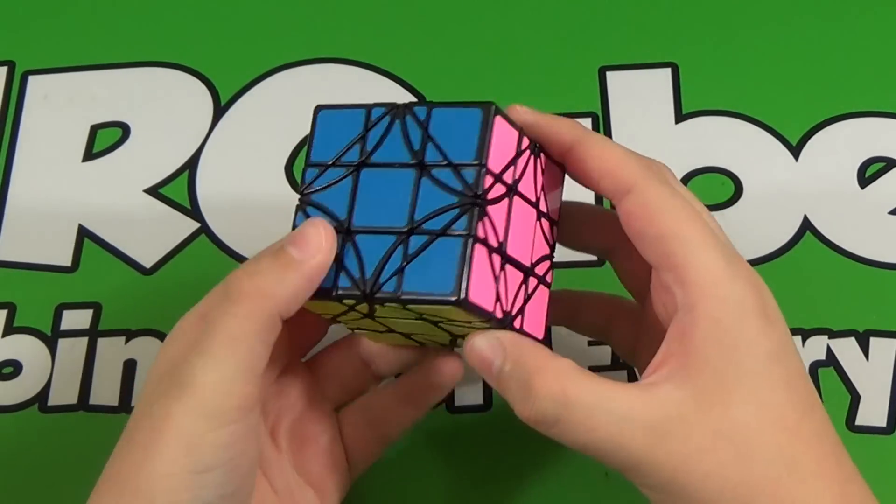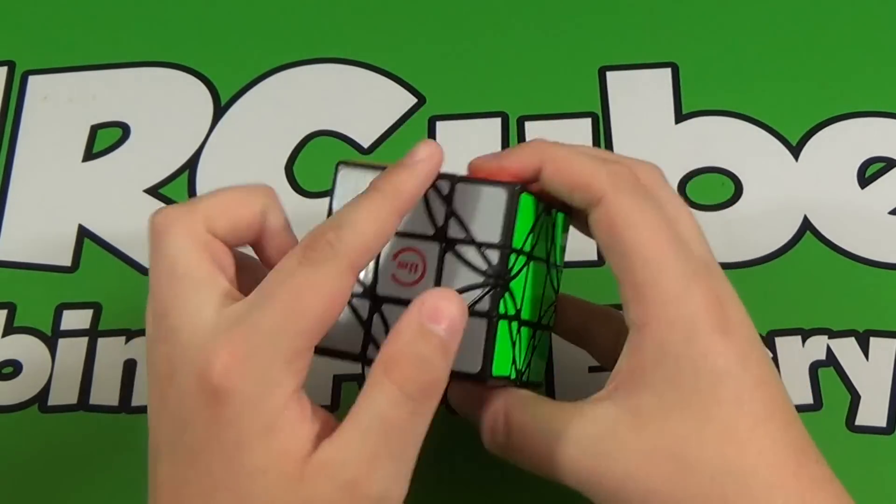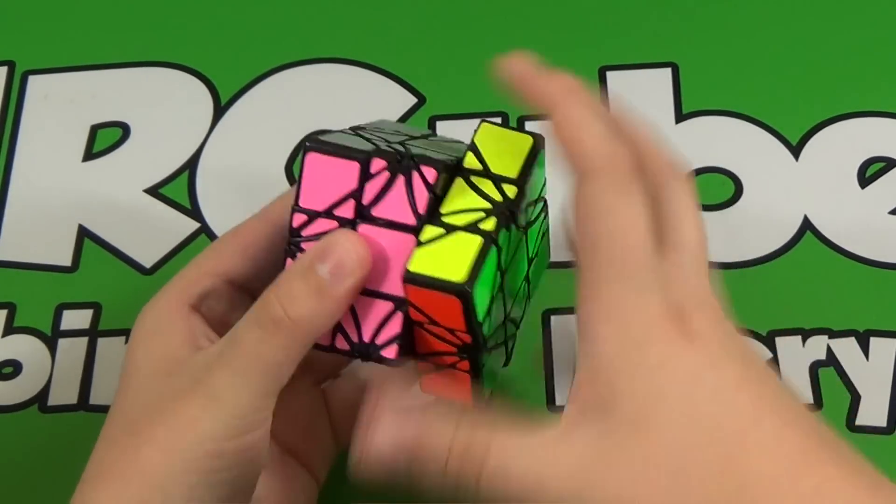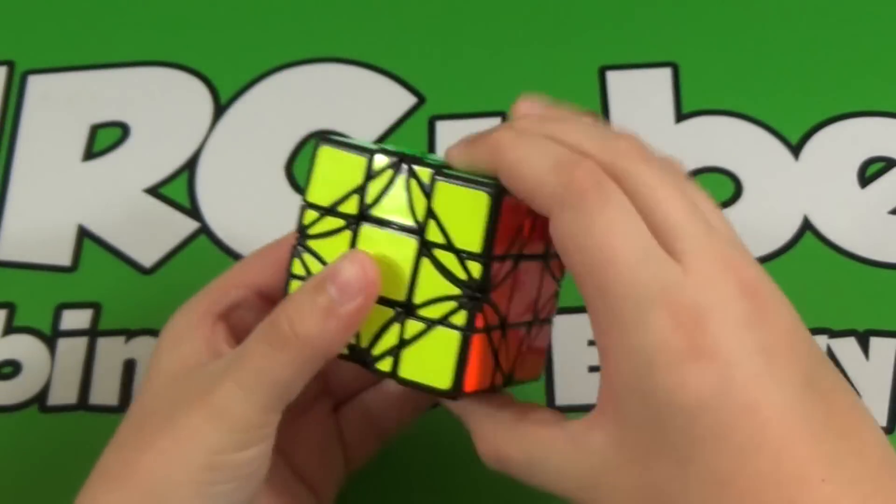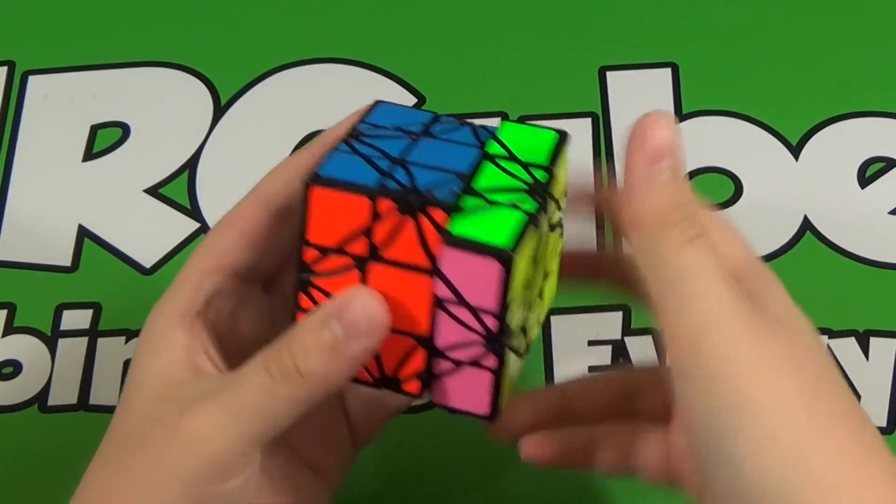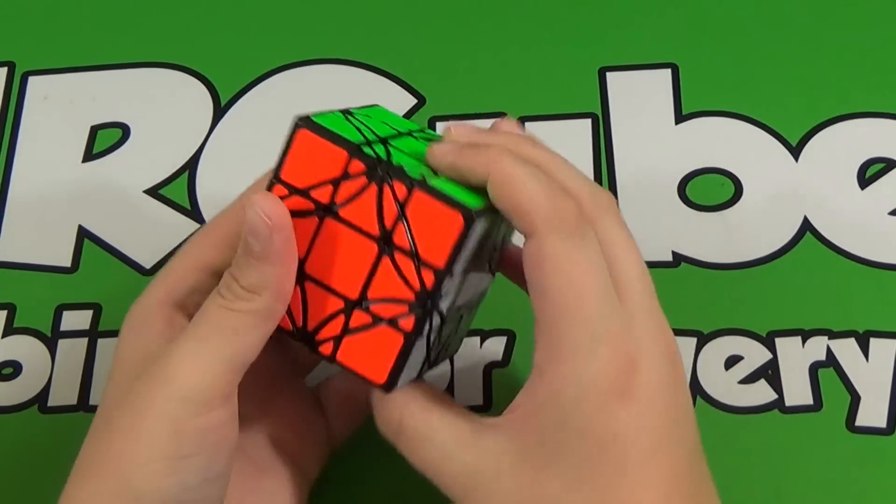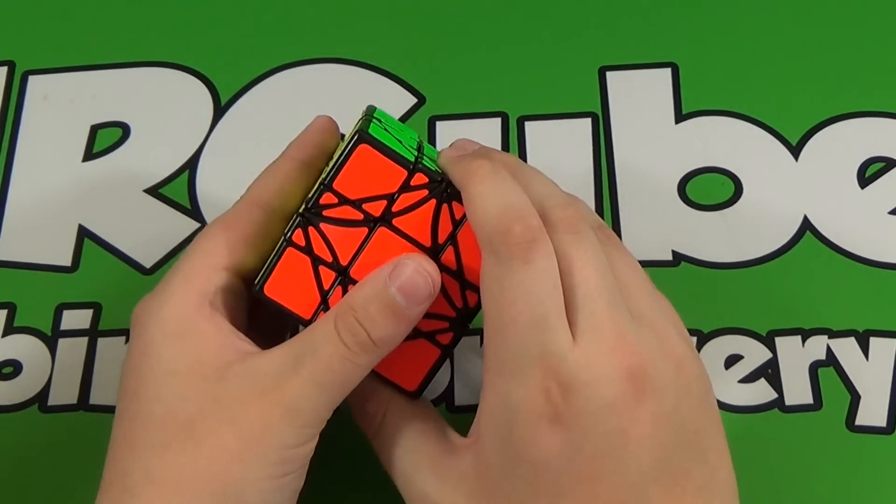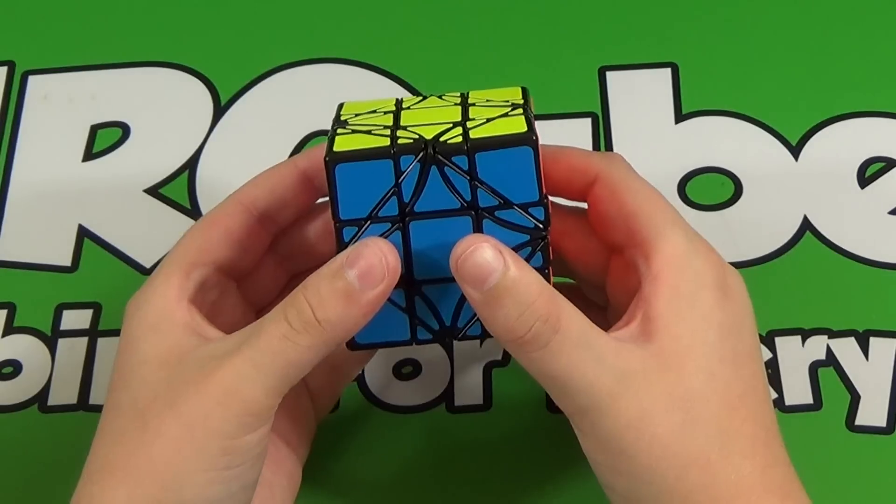As you can see, the Dreidel looks sort of like a 3x3 in that it has these types of cuts, and it actually does move that way as a 3x3. It doesn't turn bad in its 3x3 moves, it's not really finger trickable, but if we're comparing it to Mefferts or MF8, this actually turns pretty good.